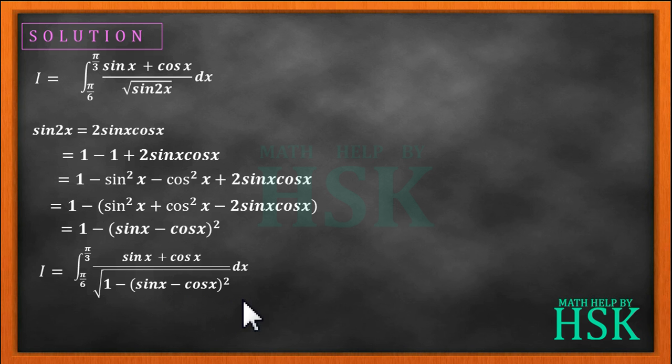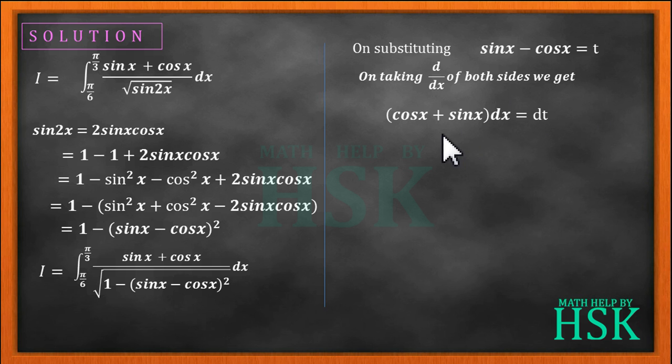On substituting sin x minus cos x as equal to t, on differentiation of both sides with respect to x, we get cos x plus sin x dx equal to dt.